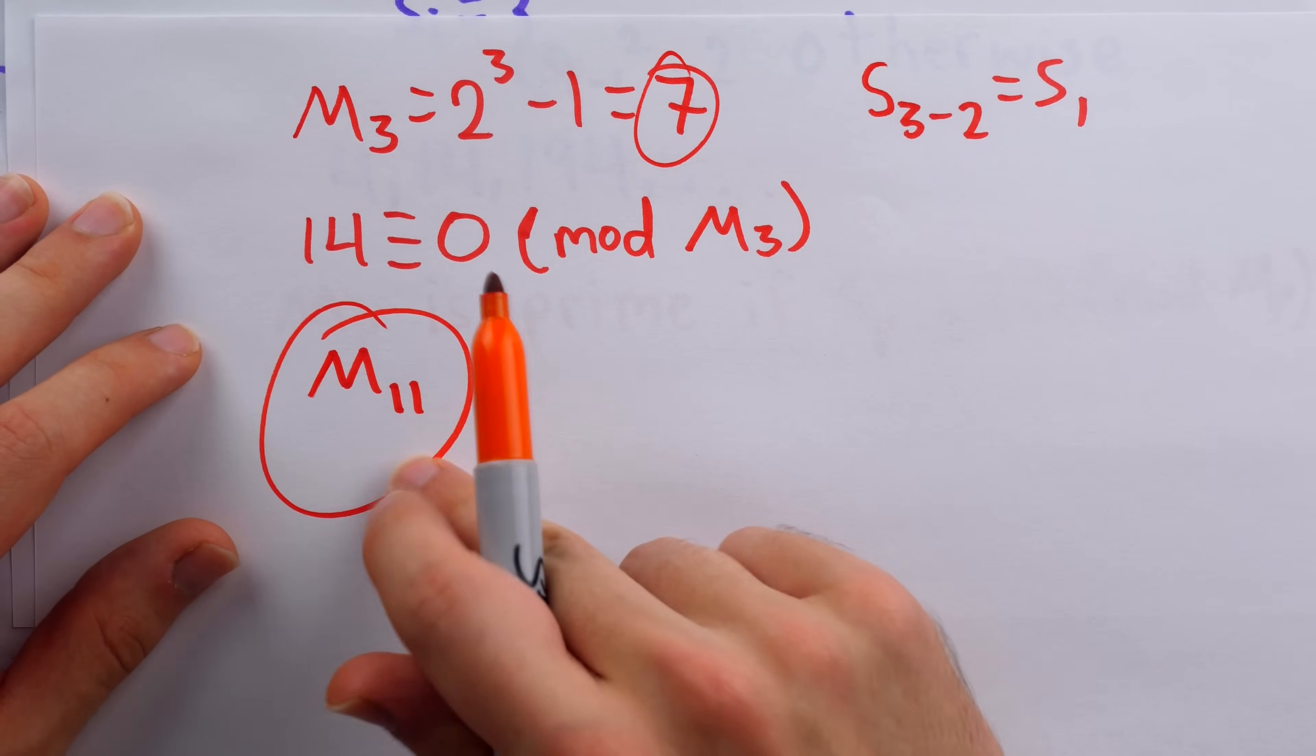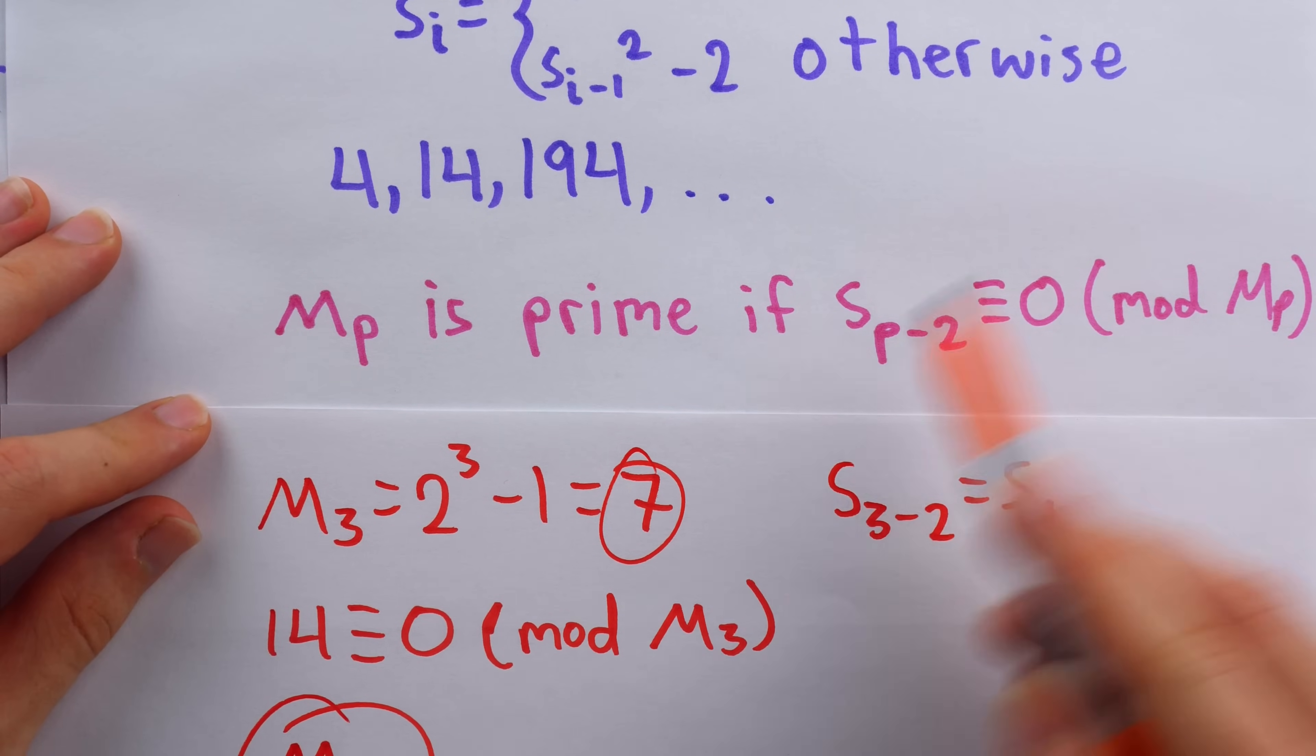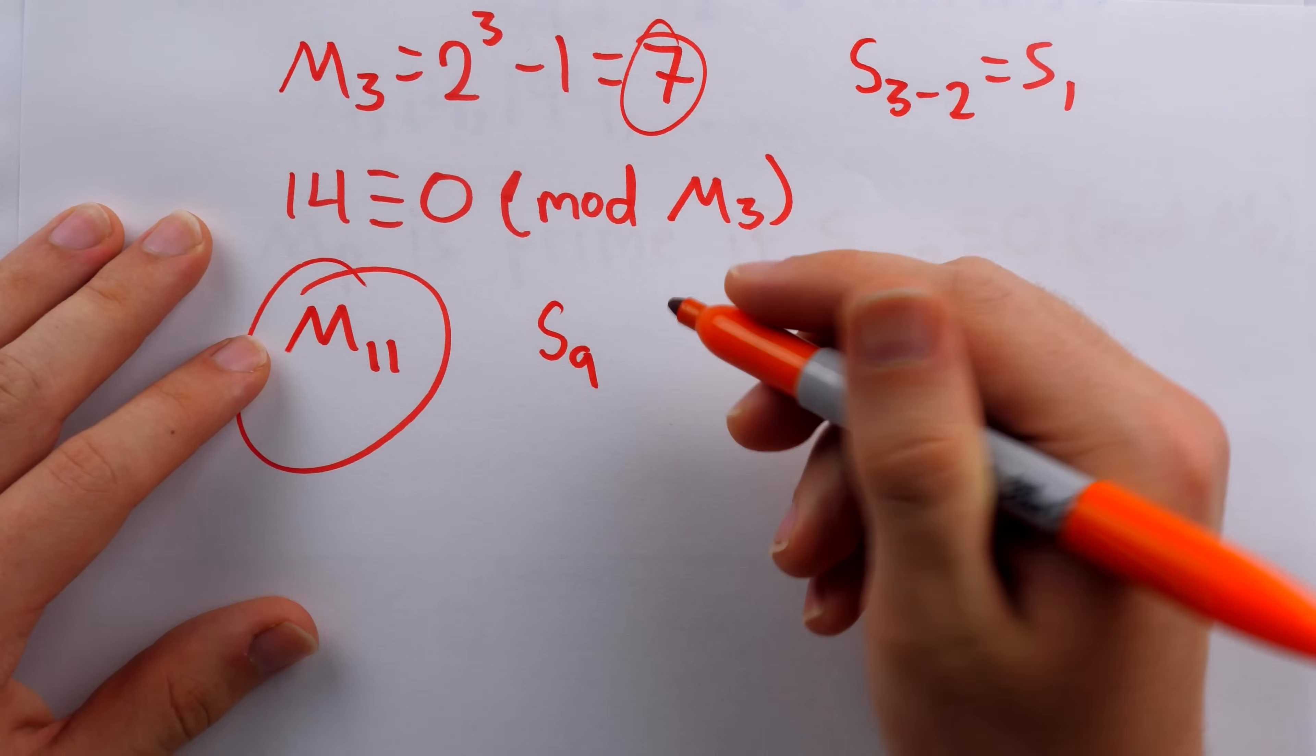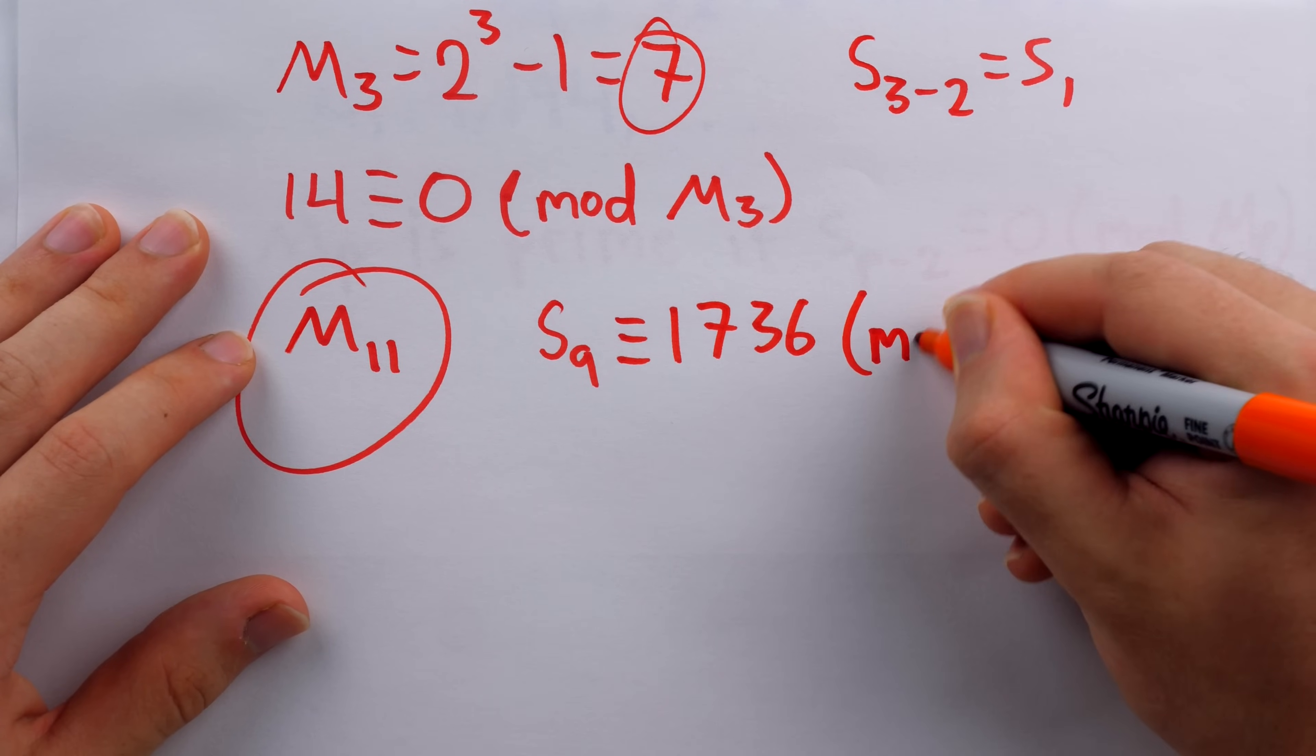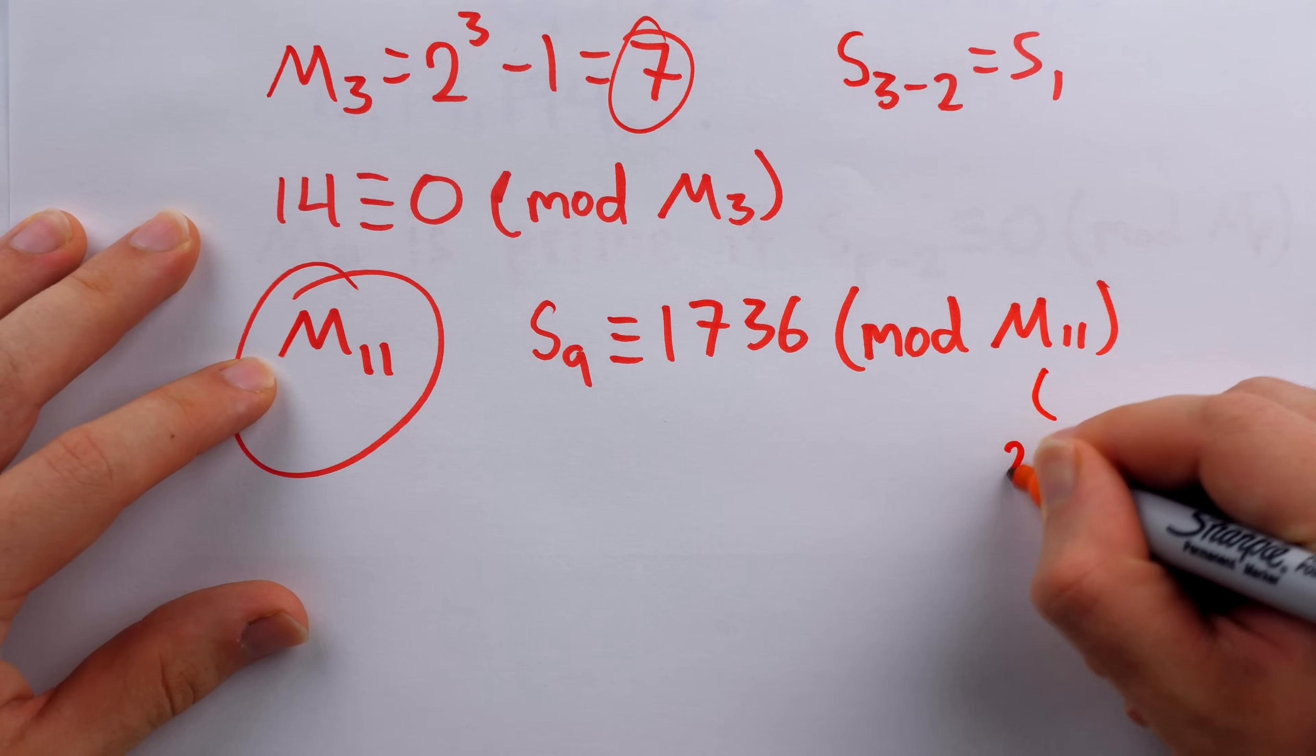So if we run the Lucas-Lehmer test on this number, we're not going to get something that's divisible by M_p at the end. So with M_11, we'd have to go all the way up to s_9, and you can run the computations yourself. It turns out that this term in the sequence is congruent to 1736 mod M_11.